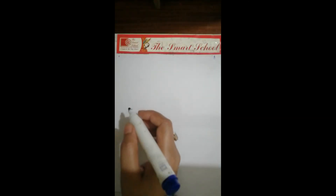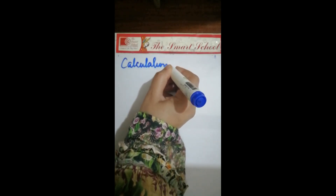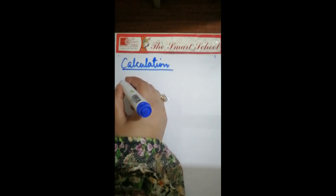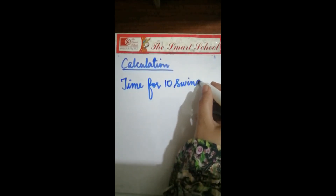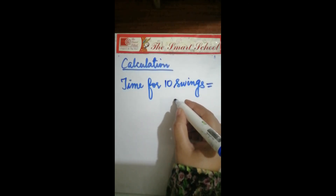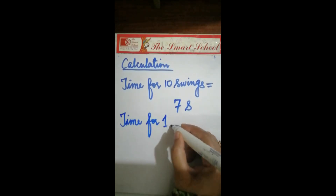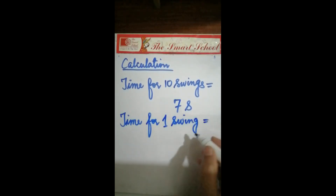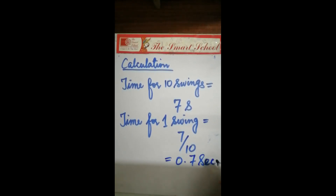Now we will do the calculation for finding the time for one swing of the pendulum. The time for 10 swings is 7 seconds. We divide 7 by 10, so our result is 0.7 seconds. This is the time for one swing.